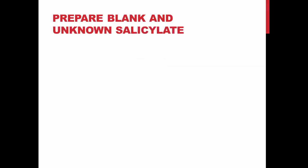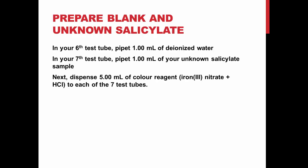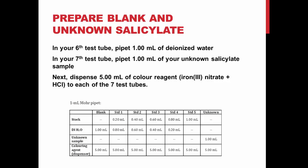Next, you will prepare a test tube containing a blank and a test tube containing your salicylate solution. In your 6th test tube, pipette 1 mL of deionized water as your blank, and your 7th test tube will contain a 1 mL aliquot of your unknown salicylate sample. Next, dispense 5 mL of color reagent — iron(III) nitrate in hydrochloric acid — to each of the 7 test tubes. This chart depicts the different reagents you will have in each test tube.